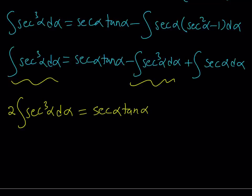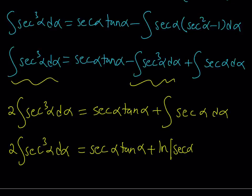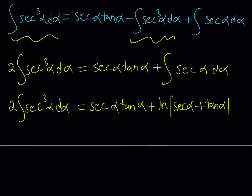Now we need the integral of secant alpha d alpha. I've made another video on powers of secant linked below, but the formula is: the integral of secant alpha equals ln of the absolute value of secant alpha plus tangent alpha. Notice the integral we were looking for appeared on the left-hand side with a coefficient of two, so we divide both sides by two to get the answer.